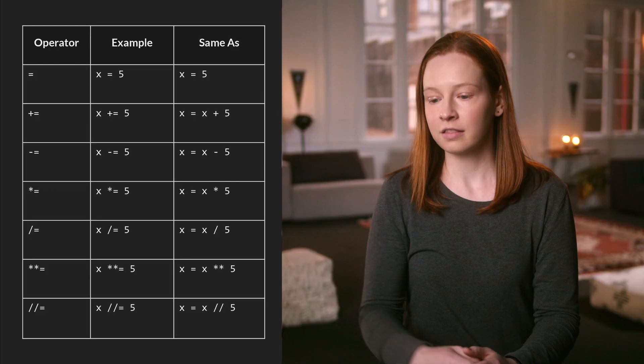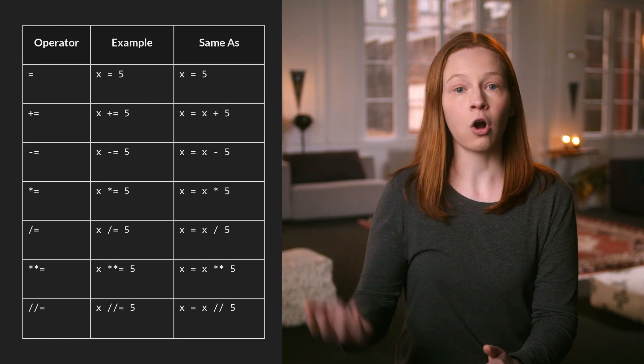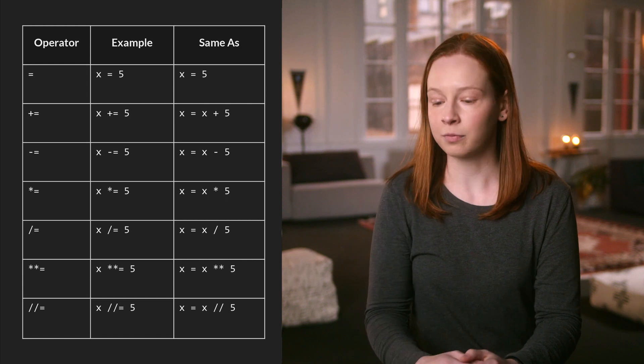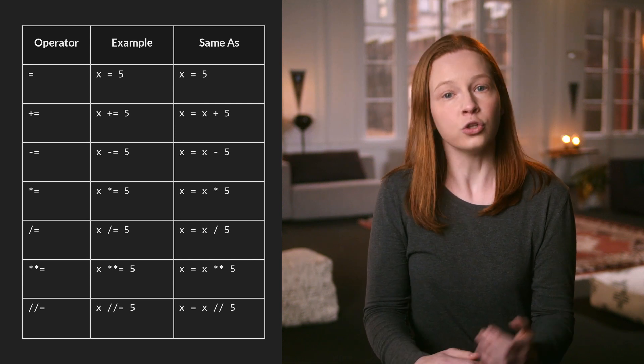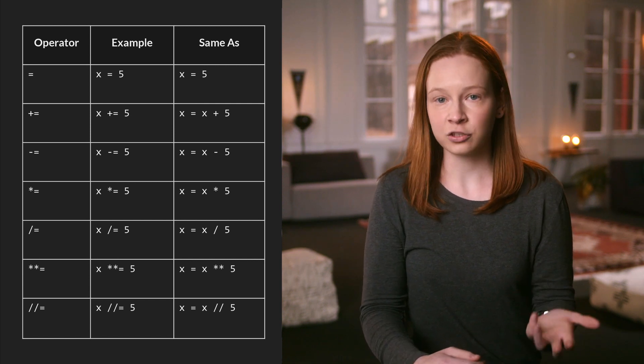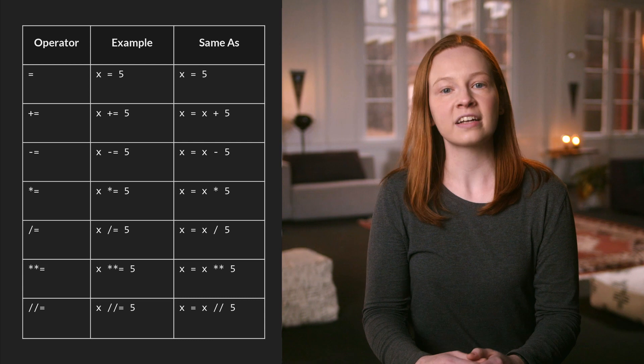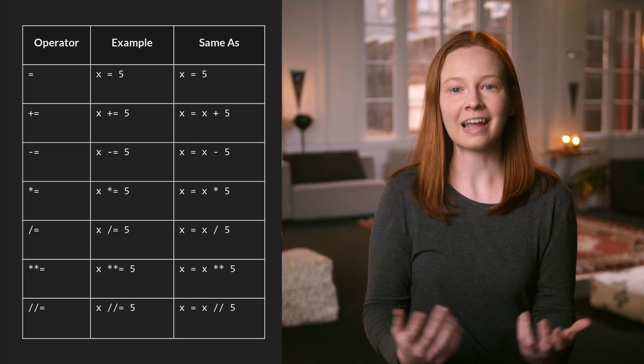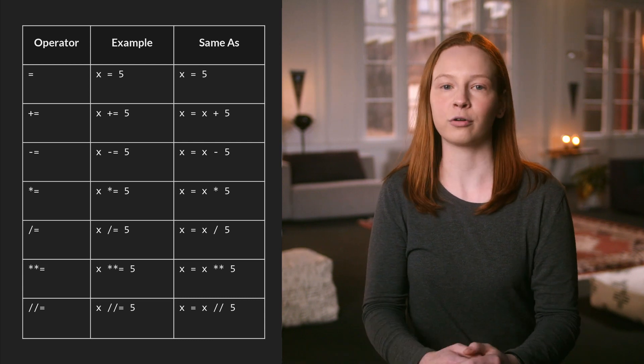So if we wanted to shorten our previous expression, we could write age += 1 to increment our puppy_age variable by one. This works for all of our other arithmetic operators as well. You can try out the next exercise to practice using arithmetic, string, and assignment operators.